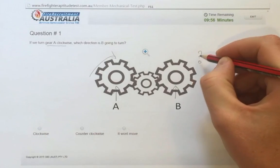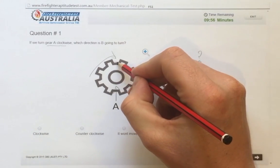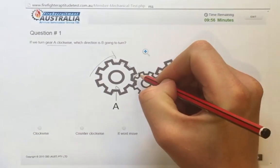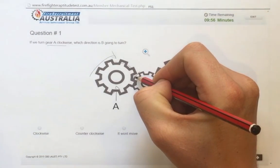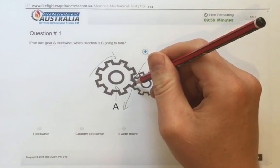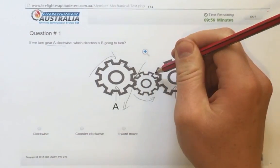So if that's turning that way, that tooth is going to impact that tooth and push it that direction, which is going to make that one turn anti-clockwise. When that tooth hits that one, it's going to push that one up or in that direction, which is going to make this turn clockwise.